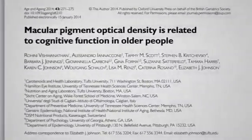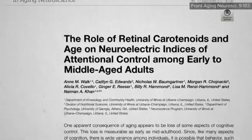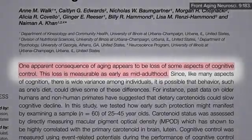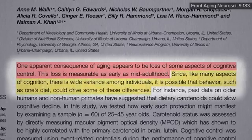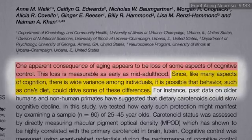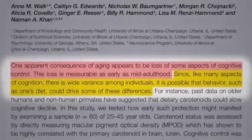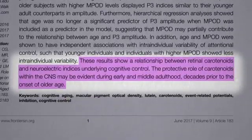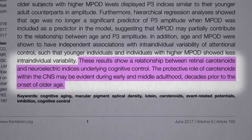Let's not wait that long, though. We know macular pigment density is related to cognitive function in older people — but what about during middle age? One apparent consequence of aging is loss of some aspects of cognitive control, which starts in mid-adulthood, but not in everybody, suggesting diet could be driving some of the differences. Older adults who have high macular pigment — lots of lutein in the back of their eyes — do significantly better on cognitive control measures. These results suggest the protective role of carotenoids like lutein may be evident decades prior to the onset of more apparent cognitive decline.